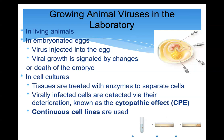Viruses grown in cell cultures can cause cell damage called the cytopathic effect, which is used to quantify viral infection. Some cell lines can keep growing in the lab indefinitely — called continuous cell lines — used for ongoing viral research. A famous example is HeLa cells, which provide a constant supply of cells for studying viruses. Cell cultures have become much more prevalent than living animals or embryonated eggs.